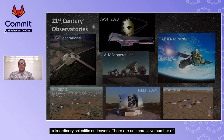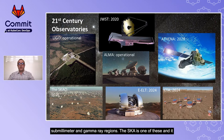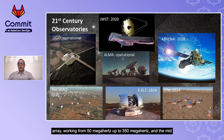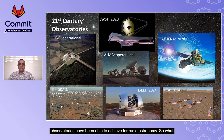There are an impressive number of observatories coming online early this century covering a large portion of the electromagnetic spectrum. These include telescopes in the optical, near-infrared, X-ray, laser, radio millimetre and submillimetre, and gamma-ray regions. The SKAO will fill a wide range with the LFAA working from 50 MHz up to 350 MHz and the mid-array picking up from 350 MHz up to 14 GHz.